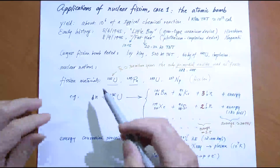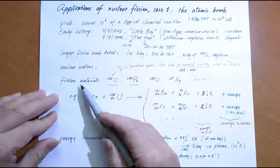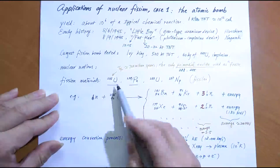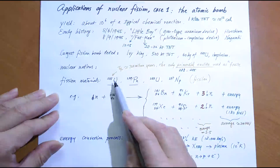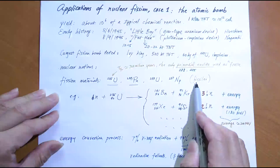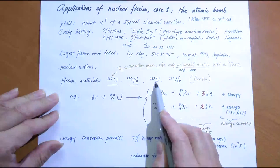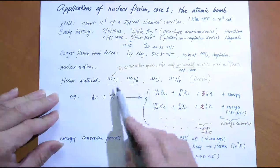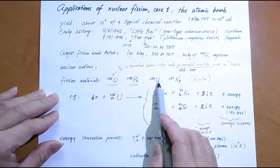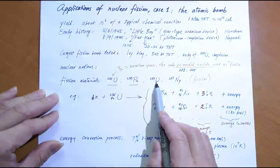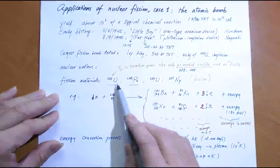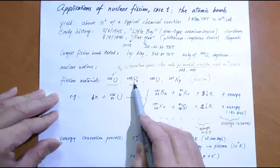The fission materials in a nuclear bomb are typically one of two: Uranium-235 or Plutonium-239. There are some lesser-known materials that can also be used, such as Uranium-233, which is actually more efficient than U-235 but is extremely rare, so it's not easy to gather enough to build a bomb. We'll primarily focus on the two main materials.